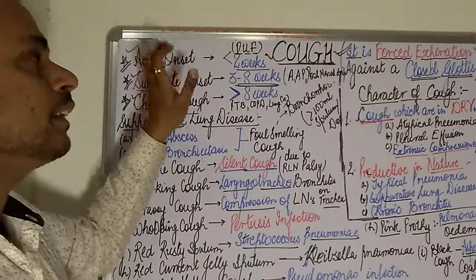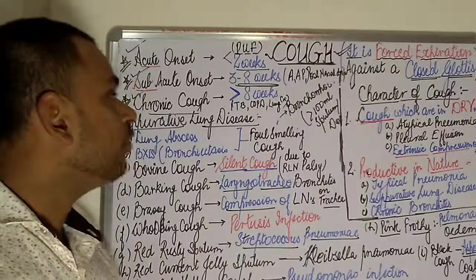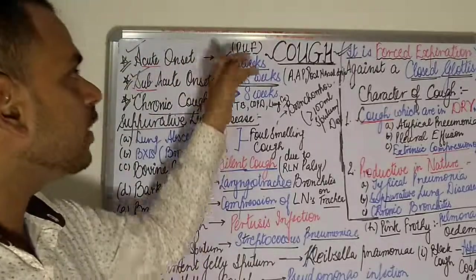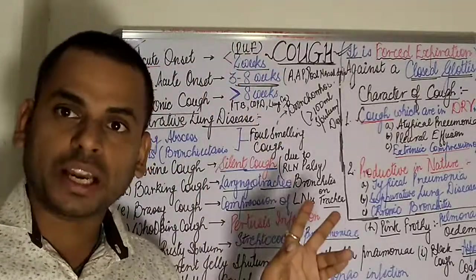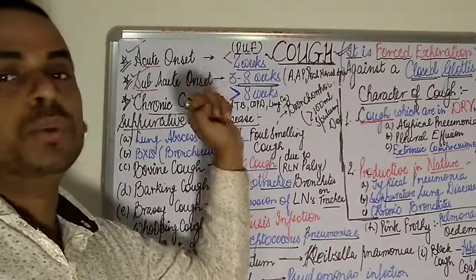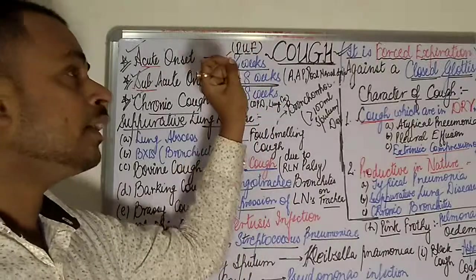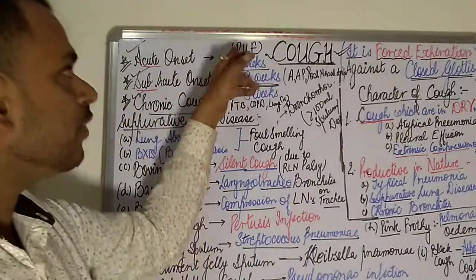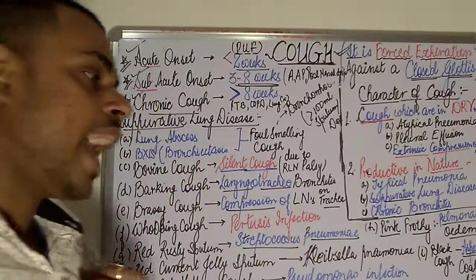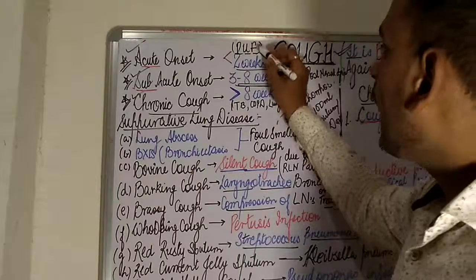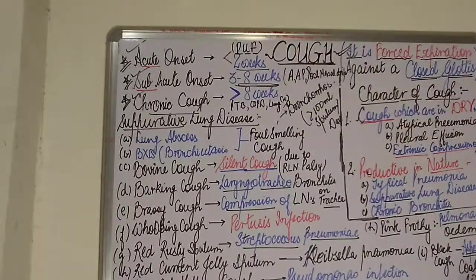For conditions where cough is of acute onset, the mnemonic is PUF. The P refers to pneumonia, the U refers to upper respiratory tract infections, and the F refers to foreign body aspiration — all presenting with cough of duration less than two weeks.